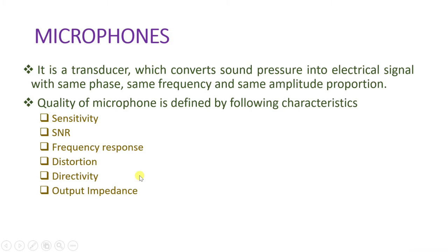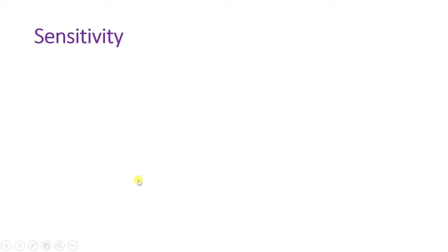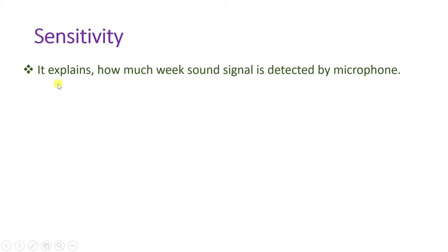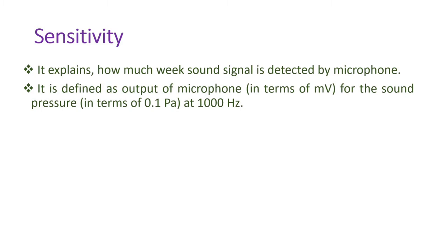Let us start with the first characteristic: sensitivity. Sensitivity explains how weak a sound signal can be detected by the microphone. It is defined as the output of the microphone in terms of millivoltage for a sound pressure of 0.1 pascal at 1000 Hz frequency. So if we give a standard signal of 1000 Hz, how much electrical output in millivoltage is generated — that is defined by sensitivity.